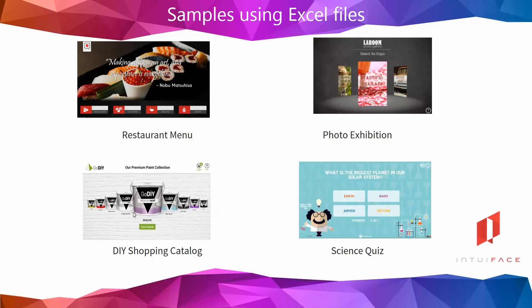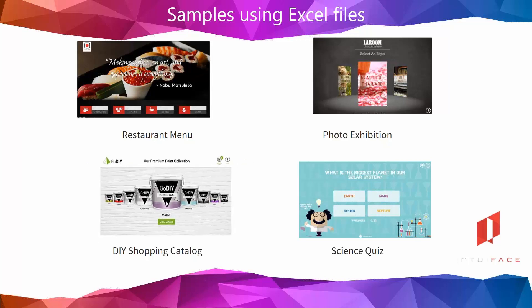The last one, the do-it-yourself shopping catalog, is one of the latest samples published and is a bit more advanced since it uses both an Excel file as a data source — a list of paint buckets with colors, different attributes and prices — and a shopping list interface asset which was custom-made for this experience, written in JavaScript.